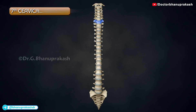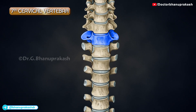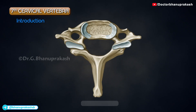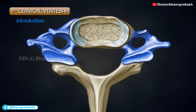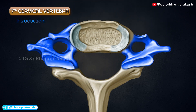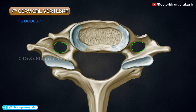The 7th cervical vertebra, also known as vertebra prominens, is named due to its long spinous process. Its spine is thick, long, and nearly horizontal, is not bifid, and ends in a tubercle. The transverse processes are large, with the posterior root larger than the anterior, and the anterior tubercle is absent. The foramen transversarium is relatively small, sometimes double, or may entirely be absent.